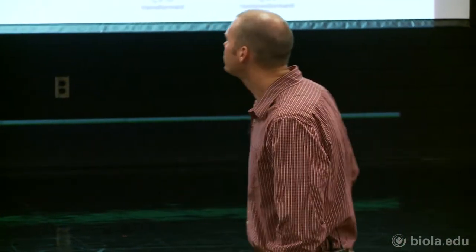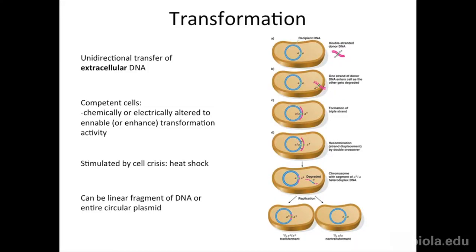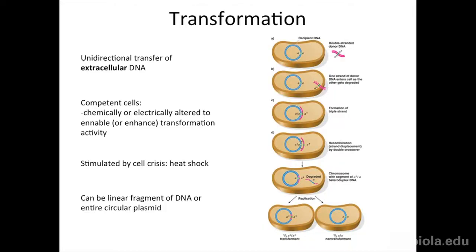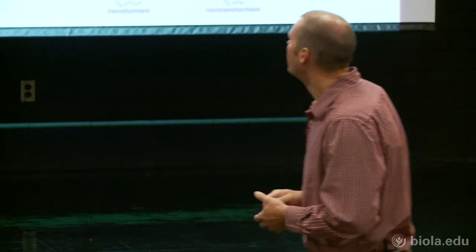That wraps up conjugation — the first way bacteria exchange genetic information, where two bacteria intentionally make pili and interchange their genetic material. The second way bacteria exchange information is through transformation. Transformation is also unidirectional — one bacteria receives genetic information, it's not an exchange. Instead of DNA coming from an HFR or F-plus strain, this is from extracellular DNA that may just be floating around in the environment.